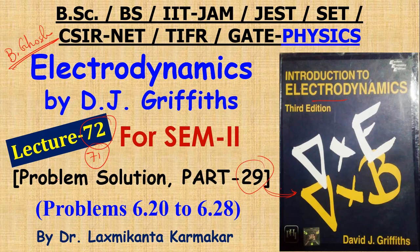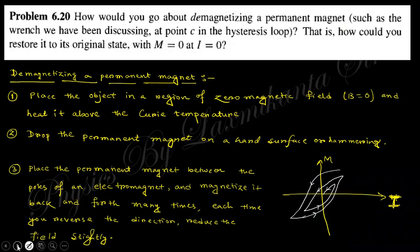In this video, we want to discuss question numbers 6.20 through 6.28 of Chapter 6 of this book. So going to question number 6.20, which says: how would you go about demagnetizing a permanent magnet? There are several different processes.